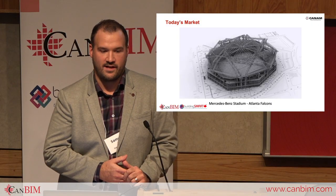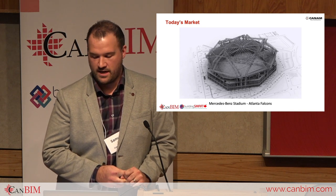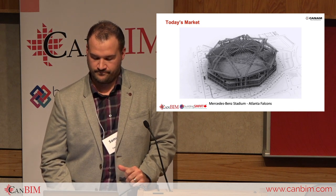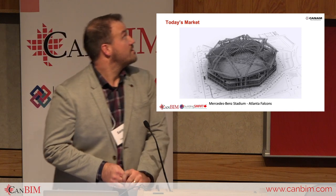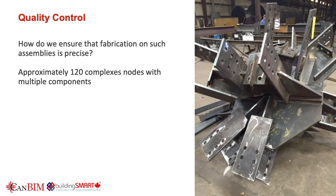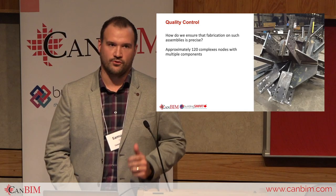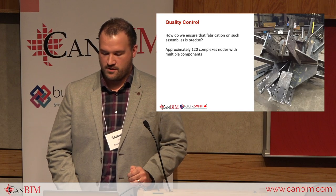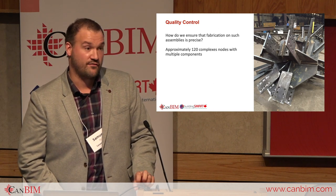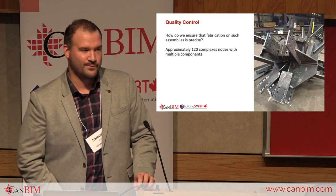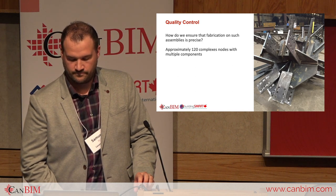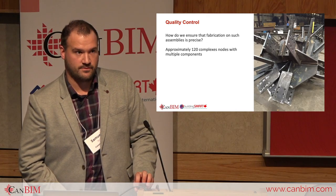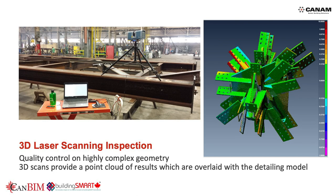It was designed to open and close in less than eight minutes. We'll showcase some BIM processes that helped Can-Am achieve this type of construction. How do we ensure the fabrication is precise on such an assembly? What kind of quality control methods could be used? In a 3D model, this would be just a simple node with multiple attaching members. Once you get to steel detailing, you get a piece that not many steel manufacturers want in their shop. We find approximately 120 of these complex nodes on this project. We used 3D laser scanning inspection — a great tool for quality control and complex geometries. It is a no-touch and non-destructive method.